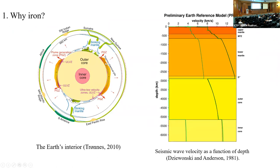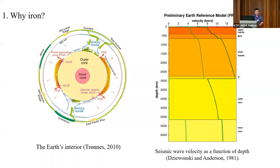Before I go to the neural network potential I developed for iron, let me give you a brief introduction to Earth's interior and explain why we need to care about iron. Every year there are a lot of earthquakes happening all over the world. On one hand they cause harm to human life and property; on the other hand they bring invaluable information about Earth's interior. From seismic observations we can get seismic velocities as a function of depth.